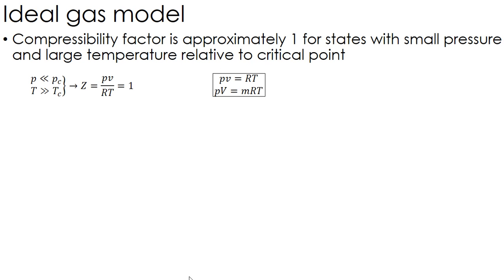this is when I have small pressure, large temperature relative to that critical point, which is the top of the vapor dome. That's when the gas behaves as an ideal gas.